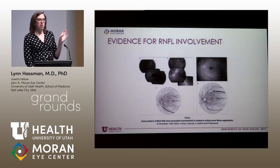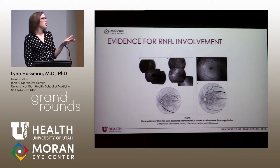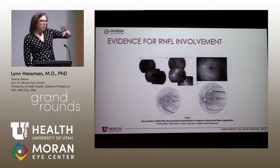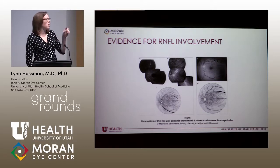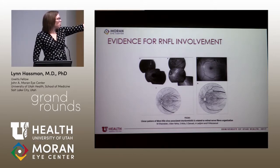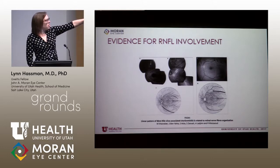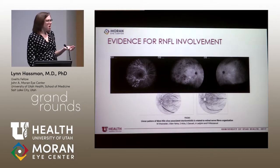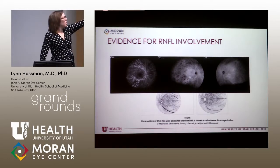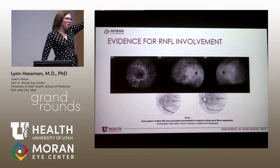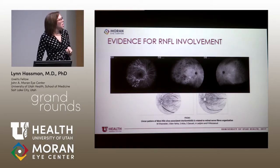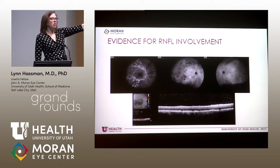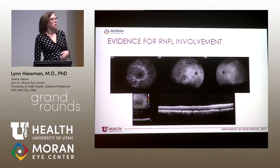Others have proposed the infection comes through the retinal nerve fiber layer, because the lesions appear to track the nerve fiber layer rather than the arcades. This group showed a map of the nerve fiber layer where lesions tracked it in their patient. Our case also showed lesions along the arcades that additionally tracked the nerve fiber layer path in both eyes. Reviewing our OCT, we did see nerve fiber layer hyperreflectivity as well as these RPE changes.